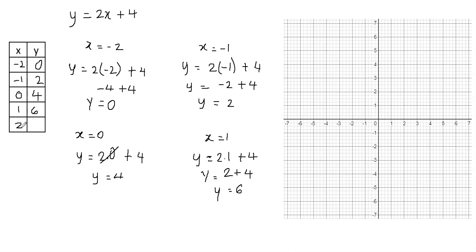Now we're going to plug in the last value. When I substitute x equals 2 into my equation, y equals 2 times 2 plus 4. 2 times 2 is 4, and 4 plus 4 gives me 8. So when x equals 2, y equals 8.